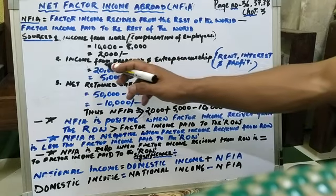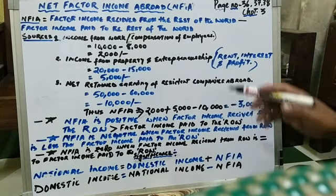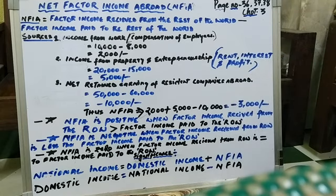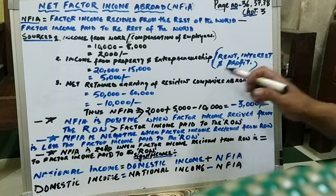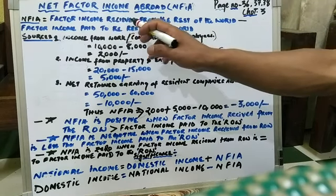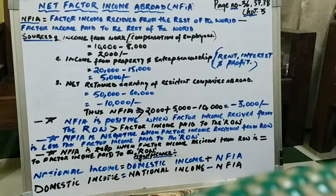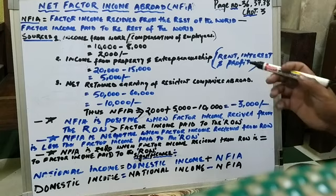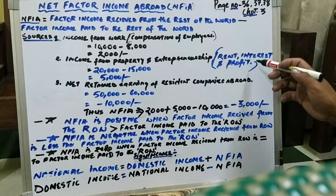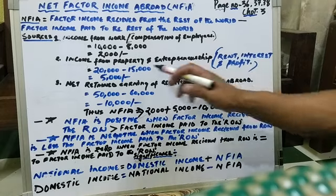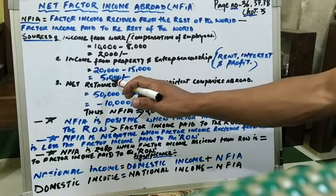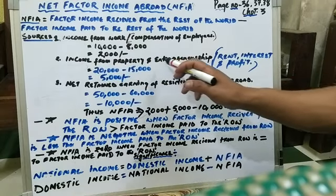Number two is income from property and entrepreneurship, which comes in the form of rent, interest, and profit. For example, an Indian resident who owns shops, buildings, and factories in America earns rupees 20,000 in the form of rent, interest, and profit — that is factor income received from the rest of the world — minus an American citizen who also owns shops, buildings, and factories in India and earns rupees 15,000 in the form of rent, interest, and profit. When we subtract, we get rupees 5,000. That is your net income from property and entrepreneurship.